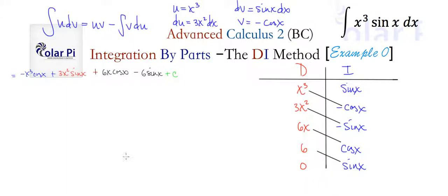There's one very important detail you must never forget: you have to start with a plus sign at the top left, then alternate plus, minus, plus, minus down the column. You would continue this pattern as long as needed — for instance, if you were integrating x to the 10th, you'd keep going.